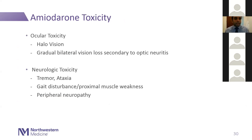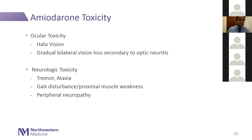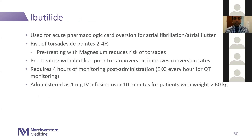Other amiodarone toxicities: ocular toxicity — halo vision is a very common and normal side effect. The more concerning ocular toxicity is gradual bilateral vision loss, thought to be due to amiodarone-induced optic neuritis. Patients on long-term amiodarone really need long-term ophthalmology follow-up. Neurologic side effects include tremor, ataxia, gait disturbance, proximal muscle weakness, and peripheral neuropathy. There is a wide range of toxicities with amiodarone, especially with long-term use.